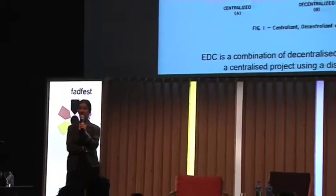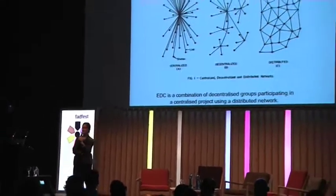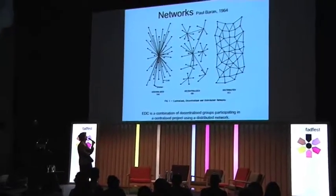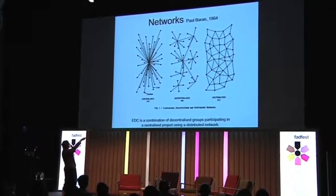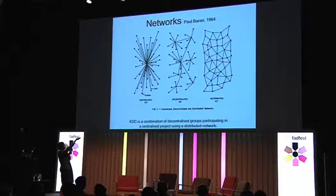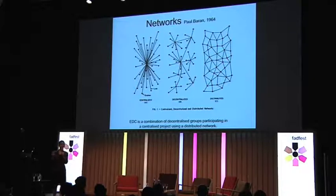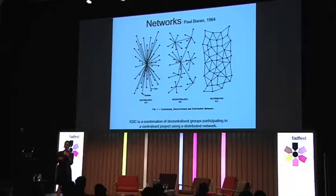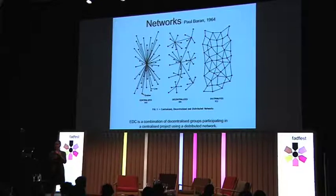I'm going to talk about Paul Baran's distributed network diagrams, drawn in 1964. This is the answer to the American military's brief to design a communication system that couldn't be broken for use in the event of a nuclear war — a piece of internet mythology which is actually true. Baran mapped three topologies: centralised, decentralised, and distributed. These are abstract mathematical models that can describe communication networks and social networks, or the relationship between the technical and the social network, which is what I'm trying to map through my work.